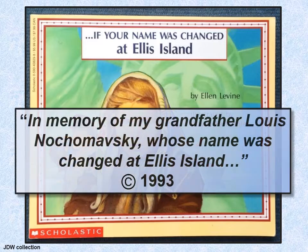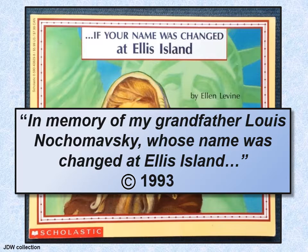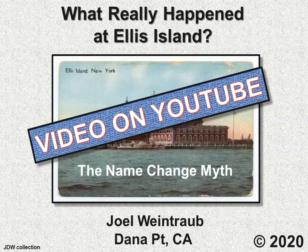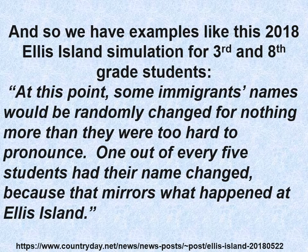Ellen Levine dedicates her book to the memory of her grandfather Louis Nochamaski, whose name she says was changed at Ellis Island. In fact, he came in as Leib — not Louis — so there's a transliteration problem. The story handed down from her father was that the inspector said 'Jews in the United States are all either Cohen or Levine' and therefore chose Levine. But if you actually do the research, the story is not correct. I go into it in detail in my YouTube 'What Really Happened at Ellis Island.'